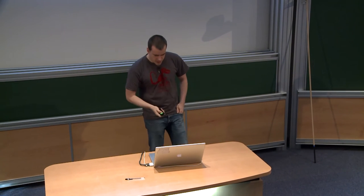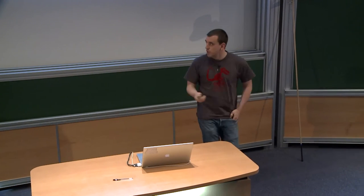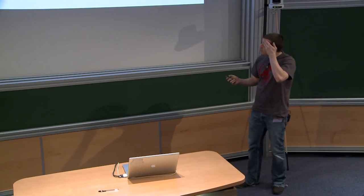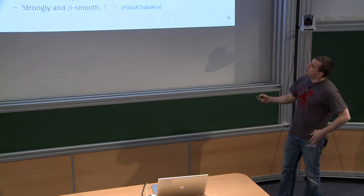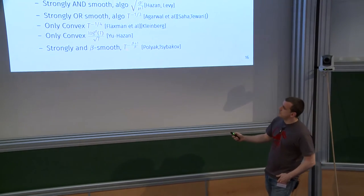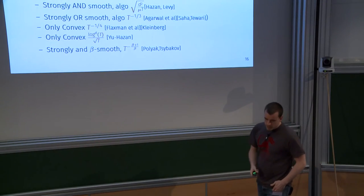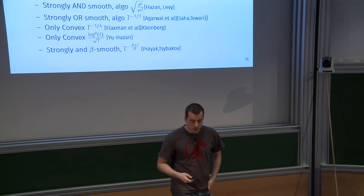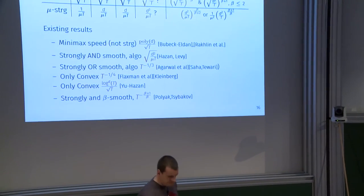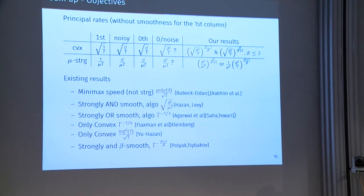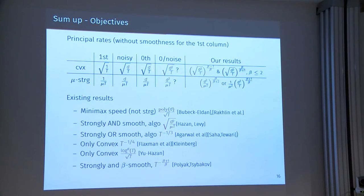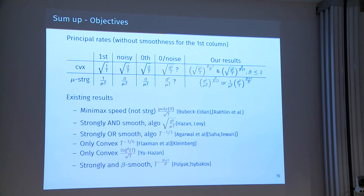There's also a paper by Polyak and Tsybakov from 1999 that gets more or less the same rates of convergence for strongly convex and beta-smooth functions, but asymptotically and without the dependency in d. We are aiming at having exactly d^2/(mu*t), and we can get pretty close to it.